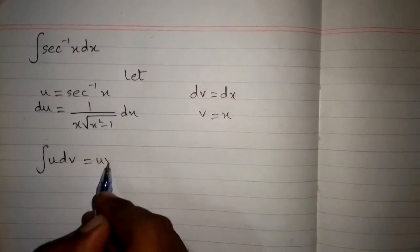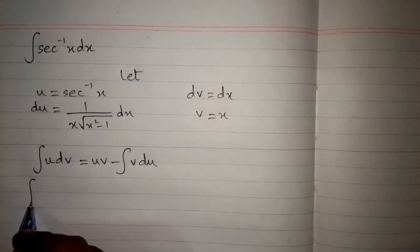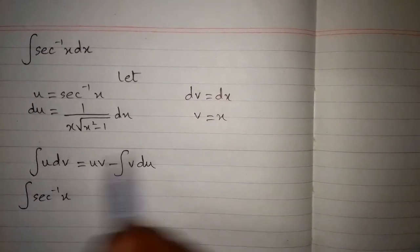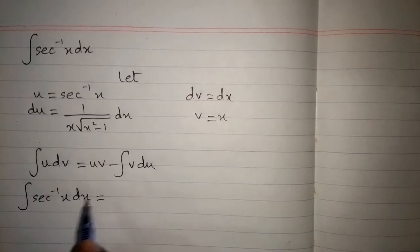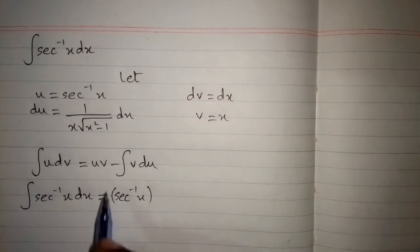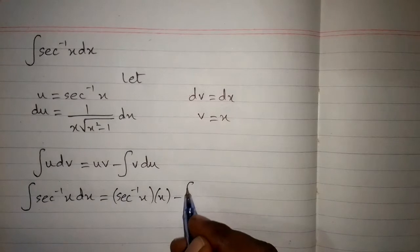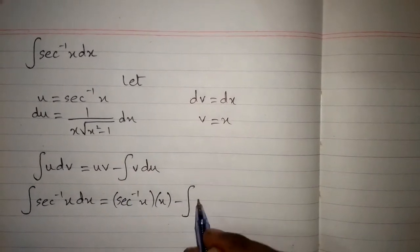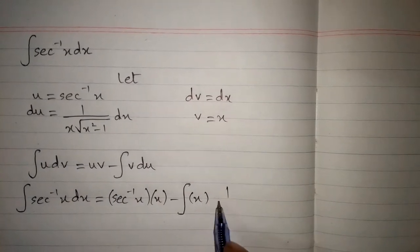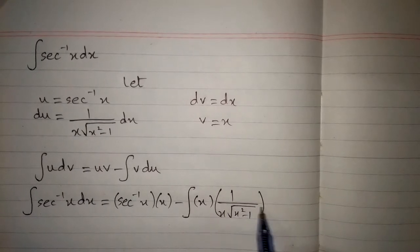Now the formula of integration by parts is: integral of u dv equals uv minus integral of v du. Here we put the value of u which is sec inverse x, and v which is x, then minus the integral of v times du, where du is 1 upon x times square root of x squared minus 1, dx.